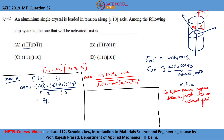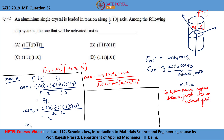Now let us find cosφ_d for option A — the angle between the tensile axis [1 1̄ 0] and the slip direction [0 1̄ 1]. So cosφ_d = (1×0 + (−1)(−1) + 0×1) divided by √2 × √2, which equals 1/2. Therefore, Schmid's factor cosφₙ × cosφ_d for option A = (2/√6) × (1/2) = 1/√6.